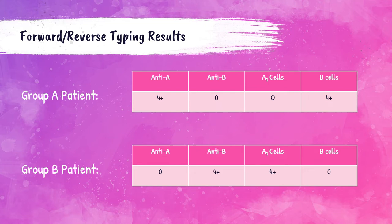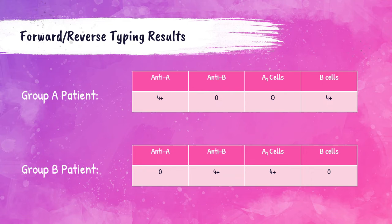For a patient with group A blood, they should have a 4-plus agglutination reaction with anti-A antisera and a negative reaction with anti-B antisera, because group A red blood cells have A antigen and no B antigen. A group A person should have a negative reaction with A1 cells and a 4-plus reaction with B cells, because they should have no anti-A antibodies but should have anti-B antibodies in their serum. Group B patients should have a negative reaction with anti-A antisera and a 4-plus reaction with anti-B antisera, and a 4-plus reaction with A1 cells and a negative reaction with B cells.